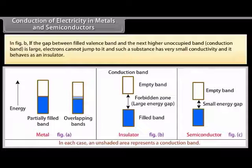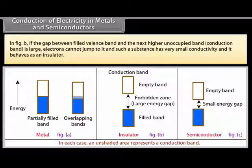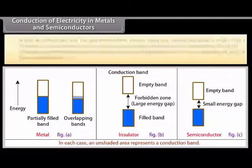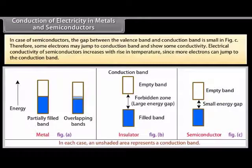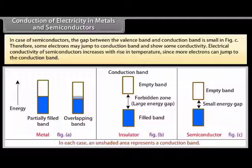In Figure B, if the gap between the filled valence band and the next higher unoccupied conduction band is large, electrons cannot jump to it and such a substance has very small conductivity and behaves as an insulator. In the case of semiconductors, the gap between the valence band and conduction band is small (Figure C), so some electrons may jump to the conduction band and show some conductivity. Electrical conductivity of semiconductors increases with rise in temperature since more electrons can jump to the conduction band.